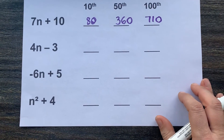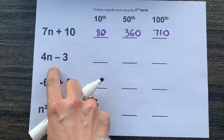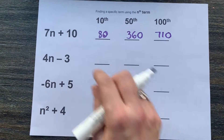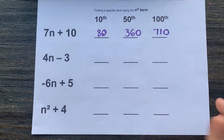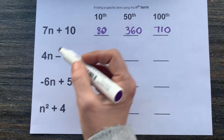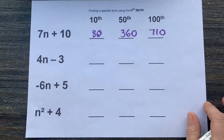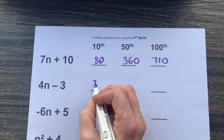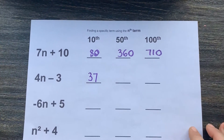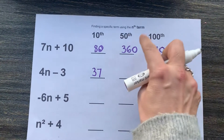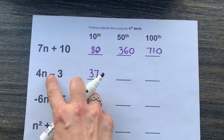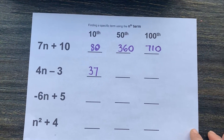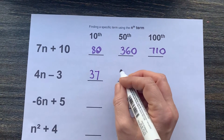We look at the second formula. So the second formula we have is 4n minus 3. So to find the 10th term for that sequence, we would plug in 10 for n. 4 times 10 is 40, minus 3 would give us 37. To find the 50th term, we would plug in 50 for n. 4 times 50 is 200, minus 3 would be 197.